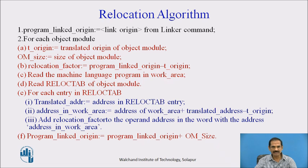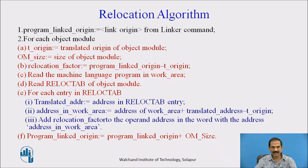We read the machine language program in the work area and read the relocatable table of an object module. For each entry in the relocatable table, the translated address is assigned to the address of the relocation entry. An address in the work area is assigned as: work area address plus translated address minus the translated origin. Then we add the relocation factor to the operand address in the word at that work area address. Finally, the program linked origin is assigned the program linked origin added to the object module size.